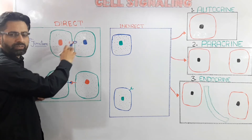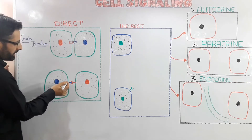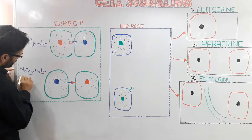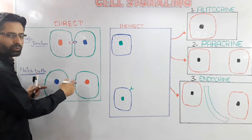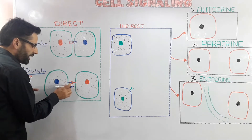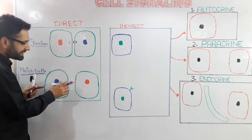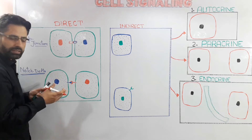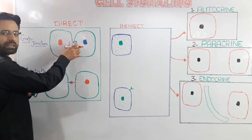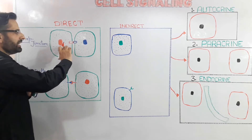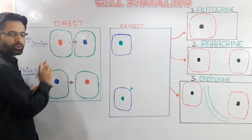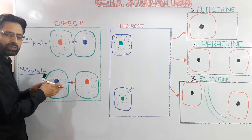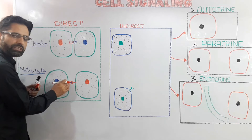This is direct communication between two cells. Another example of direct communication is involved in the Notch pathway. Here we have the Notch protein and the Delta protein, which are involved in direct cellular communication. We have one transmembrane protein expressed on the plasma membrane that acts as a signaling molecule. Here, unlike the gap junction, we do not have direct cytoplasmic connection. Instead, these two cells are physically in contact with each other through molecules expressed on the plasma membrane.